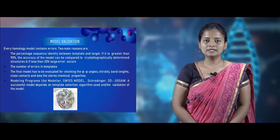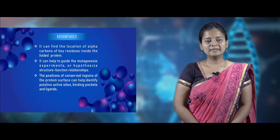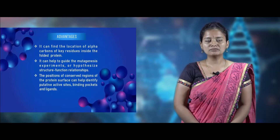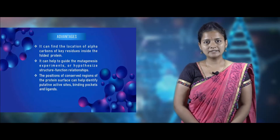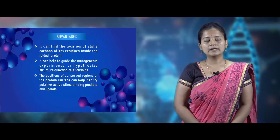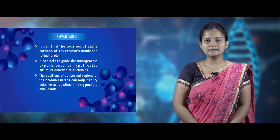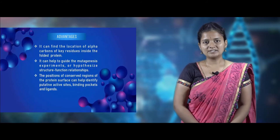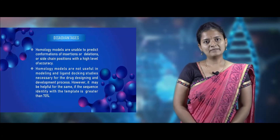The successful model depends on the template selection algorithm used and model validation. The advantages of homology modeling are: it helps us find the location of the alpha chain in folded proteins; it is used to study mutagenesis experiments; it helps find the structure-function relationship; and it helps find the active sites, loops, and side chains in the conserved region of the protein.